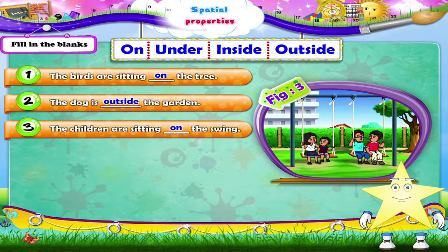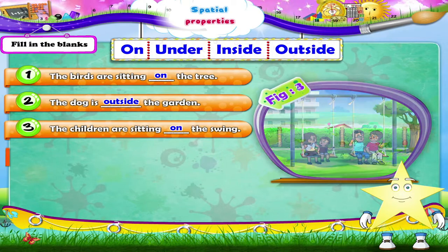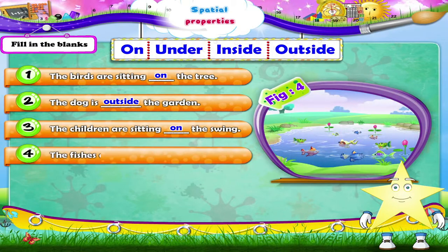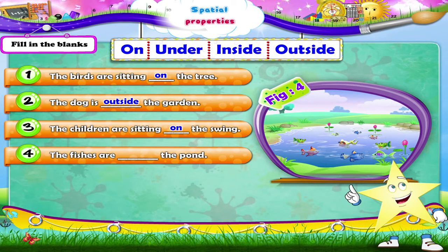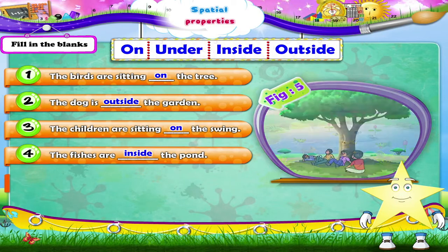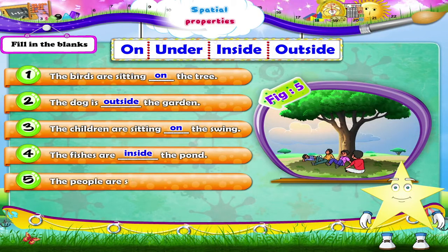One more blank, Starry. The fishes are ___ the pond. What is the correct answer? Yes, inside. The people are sitting ___ the tree. The people are sitting under the tree.